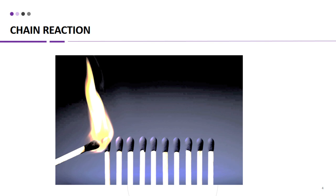The chain reaction is a self-sustaining process that occurs during nuclear fission. It begins when a heavy nucleus, such as uranium-235, absorbs a neutron and becomes unstable, leading to the nucleus splitting into two smaller nuclei, along with the release of several additional neutrons. These additional neutrons can then go on to cause fission in other heavy nuclei, which in turn release more neutrons, leading to a cascade of fission reactions. This creates a self-sustaining chain reaction that continues as long as there are enough fissile material and neutrons present to sustain it.